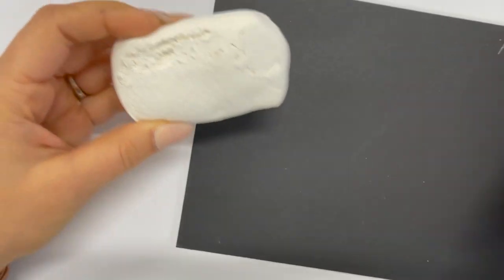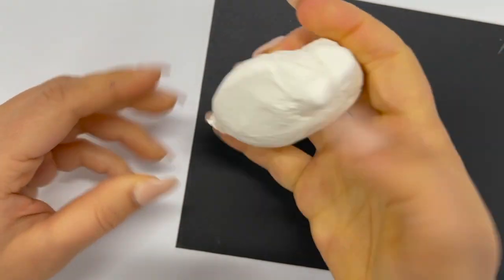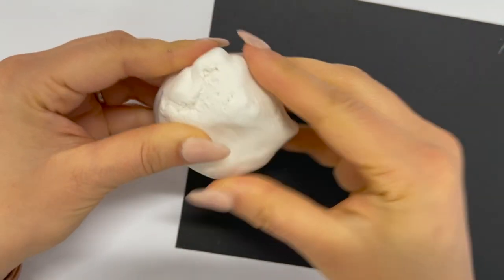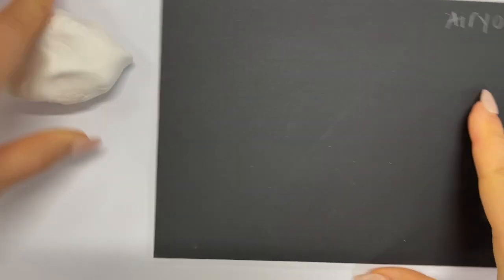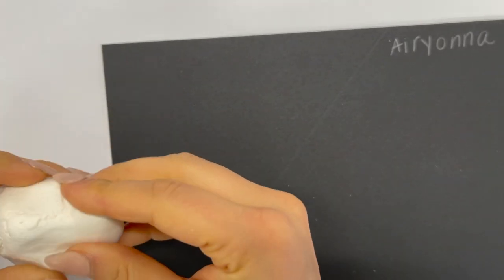To soften it up I'm just squishing it in my hands and kind of forming a rough dough shape, a rough little ball shape like a piece of cookie dough.